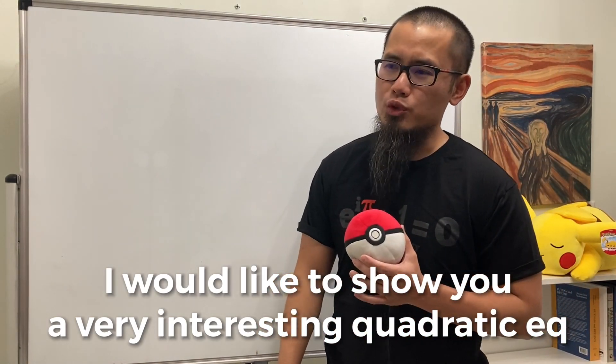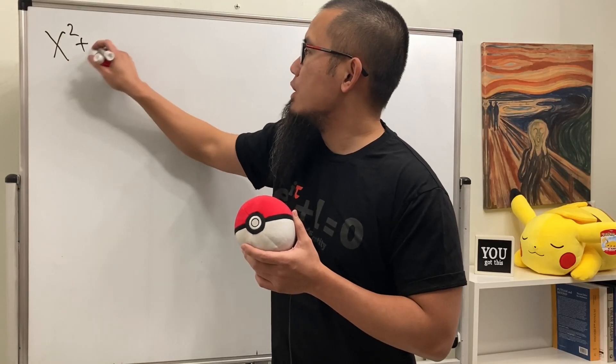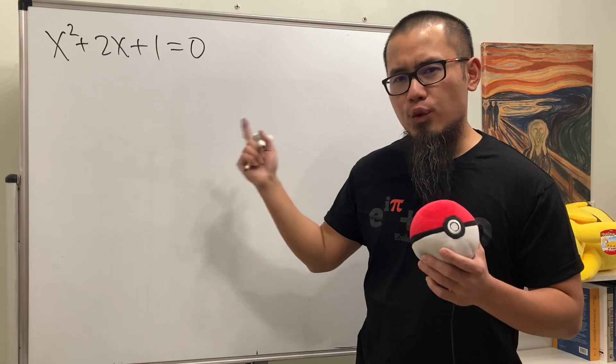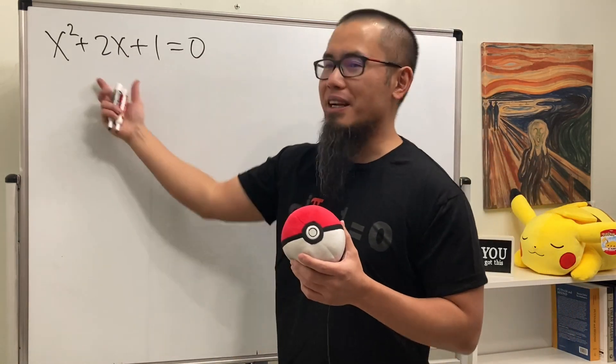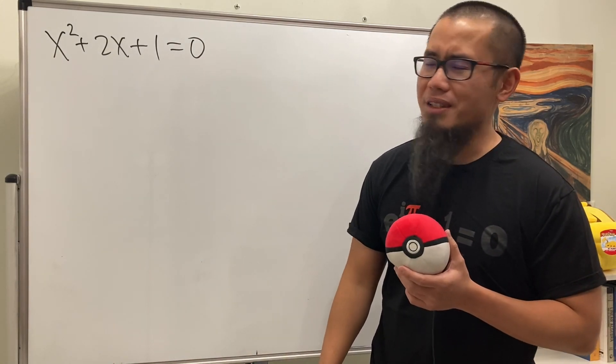I wanted to show you a very interesting quadratic equation, so have a look right here. x squared plus 2x plus 1 equals 0. Of course, this is interesting because it's easy. We can factor this, and we get x plus 1 squared equals 0. x is just equal to negative 1. Done.